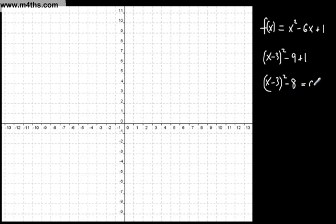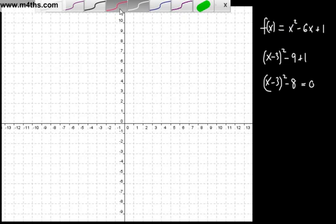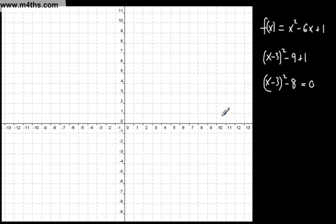Now, if we set this to 0, then we can get points of intersection. But automatically, we can find its minimum point. This is a positive parabola which we should spot. There's no negative in front of our x squared. So we can automatically pick our place down here and say that the minimum point is at 3, negative 8.